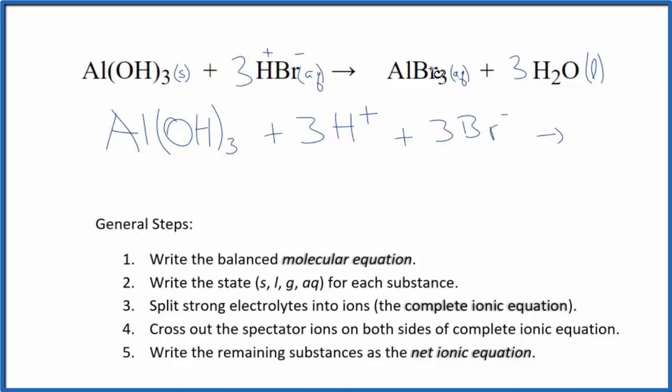For the products we know that aluminum has a 3 plus ionic charge and then we said bromine, bromide ion, 1 minus. So we write Al 3+, plus we have 3 of these bromide ions, just like in the reactants, plus 3 water molecules. So this is our complete or total ionic equation.